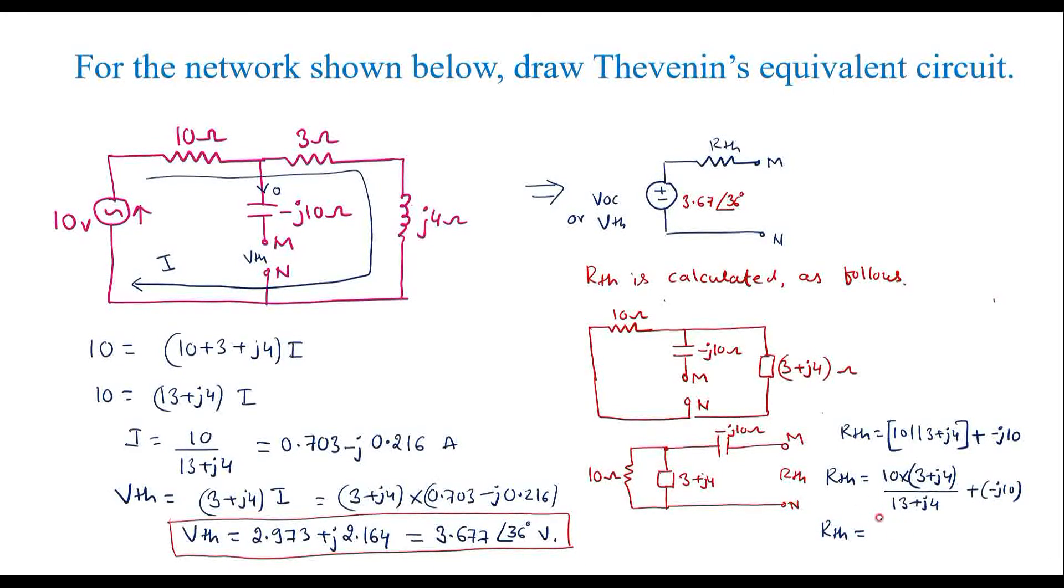Simplifying this, RTH is equal to 2.972 minus 7.837J. In polar form, RTH is equal to 8.38 at an angle of minus 69.22 degrees.